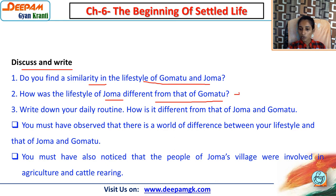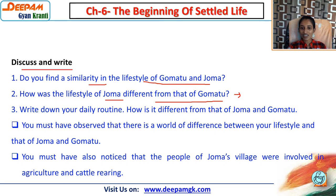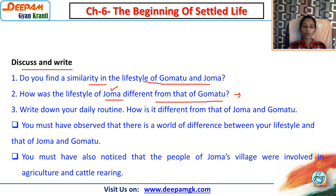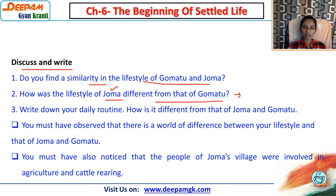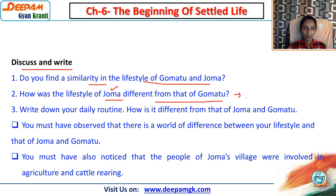In Gomatu's lifestyle there was no permanent settled place, but in Joma's lifestyle the place was fixed. Joma's people had also turned towards farming and domestication of animals, which was not present in Gomatu's time.